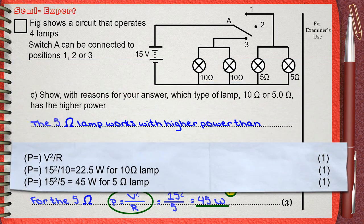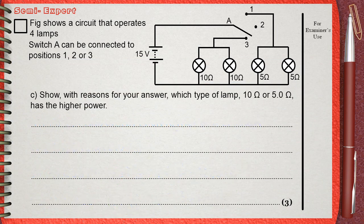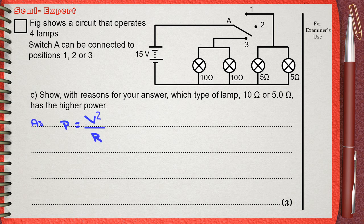Actually, there is another answer that does not need any calculations, but it needs another skill. This skill is how to find out the relationships between different quantities from a certain equation. If we use again P equals V square over R...